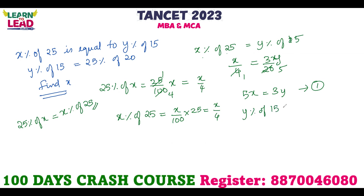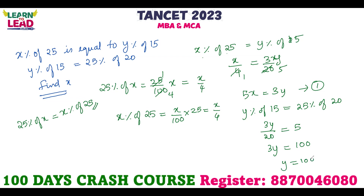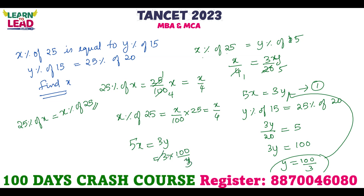Y% of 15 is equal to 25% of 20. So 3y/20 = 25% of 20, giving 3y = 100, therefore y = 100/3. Substituting into equation 1: 5x = 3y = 100, so x = 20. The answer is x = 20.